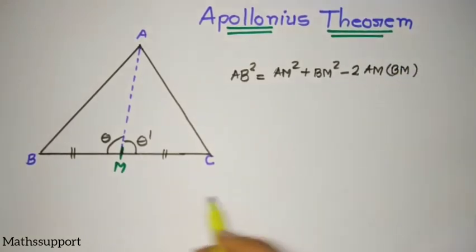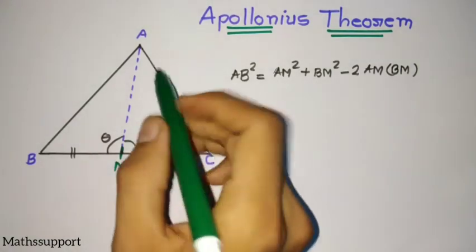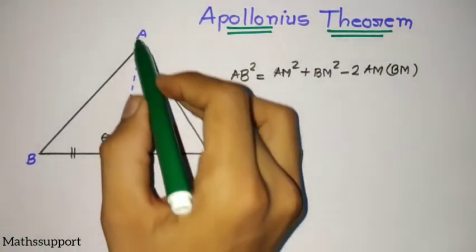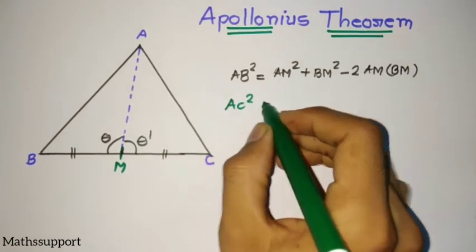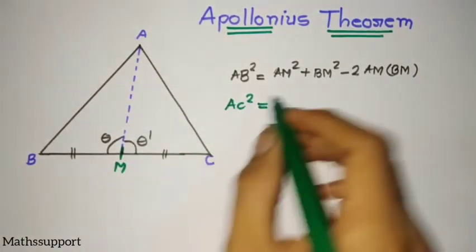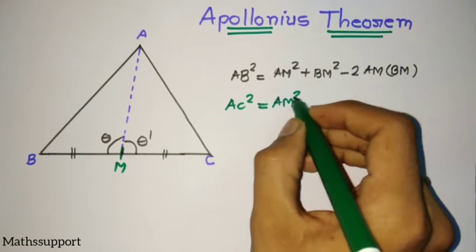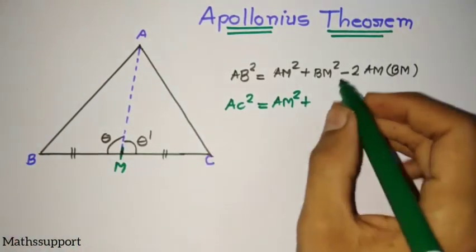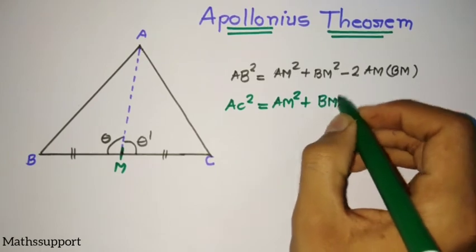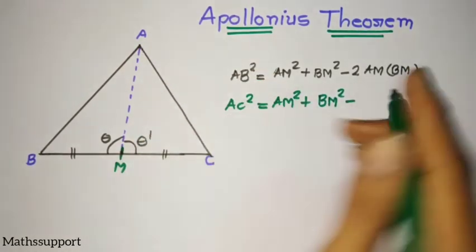Now if I use the same cosine formula for triangle AMC, then AC² will be AM² plus BM². In place of MC I will use BM, so it's minus twice AM into BM.